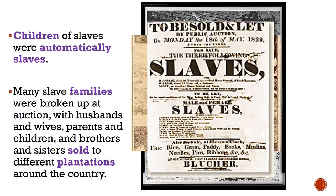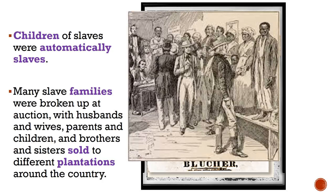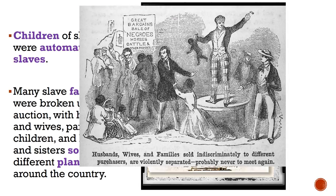Many slave families were broken up at auction, with husbands and wives, parents and children, and brothers and sisters sold to different plantations around the country. There was no guarantee that your slave master would not sell you again later in life. In the 1600s, 1700s, and 1800s, African Americans who lived in the United States were not seen as equal to other humans who were white. Slaves were considered property, and because of that, they were not seen as normal human beings, and basic human rights were not respected.